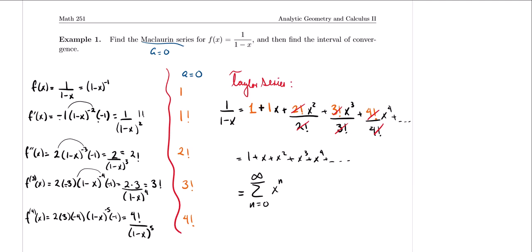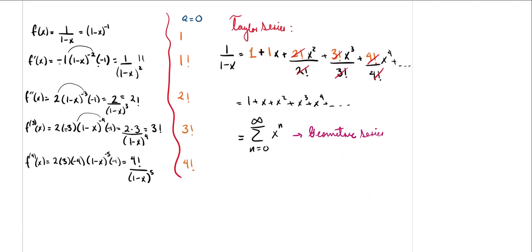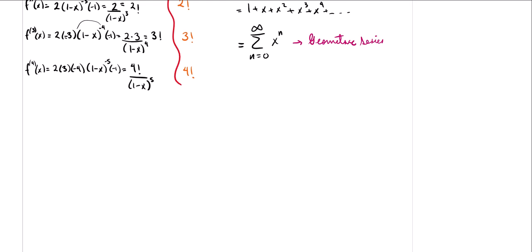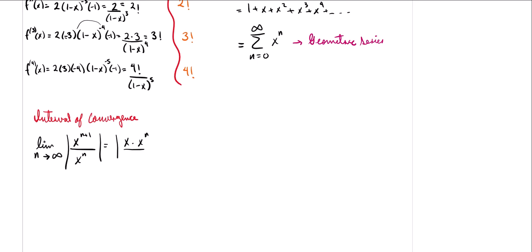Notice this looks like a geometric series — the Taylor series for 1/(1-x). The problem also asked us to find the interval of convergence. To find it, we use the ratio test: take the limit as n approaches infinity of the absolute value of a_(n+1) over a_n, which is |x^(n+1) / x^n| = |x · x^n / x^n| = |x|. Since we want it to converge, we set |x| < 1.